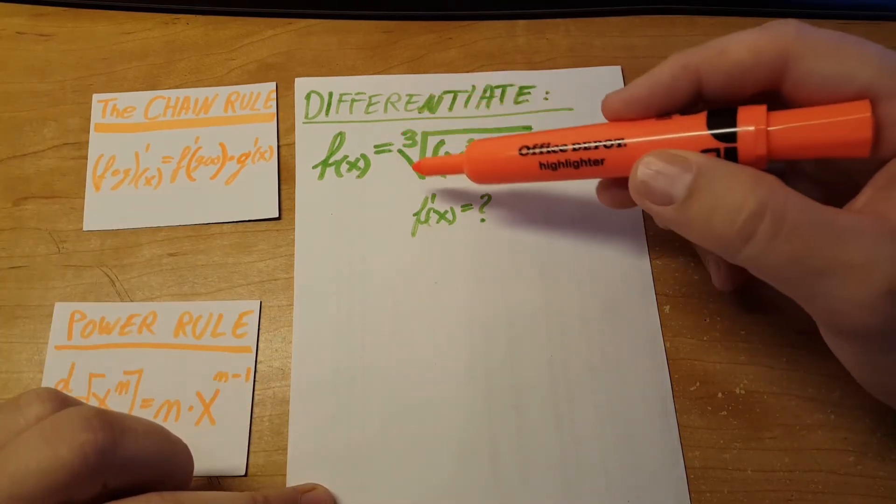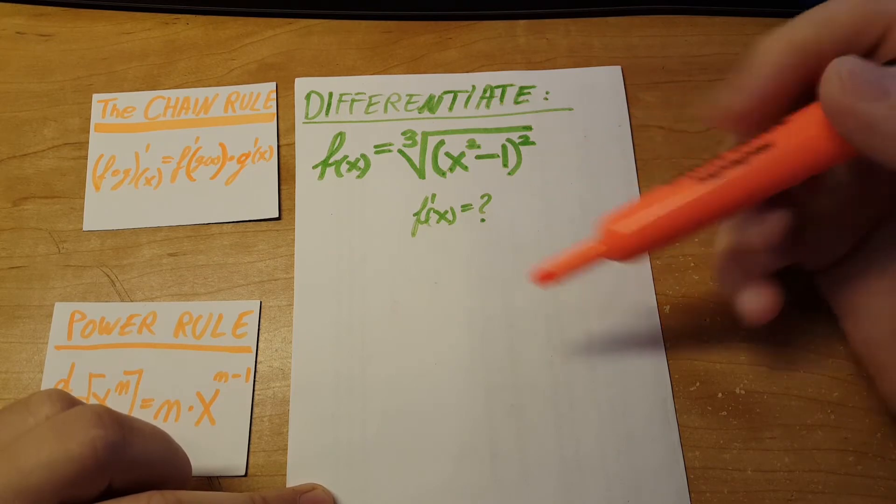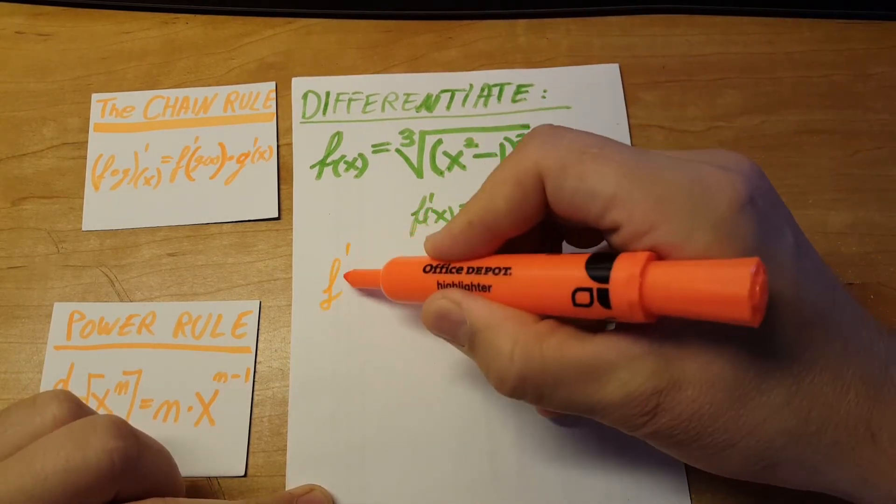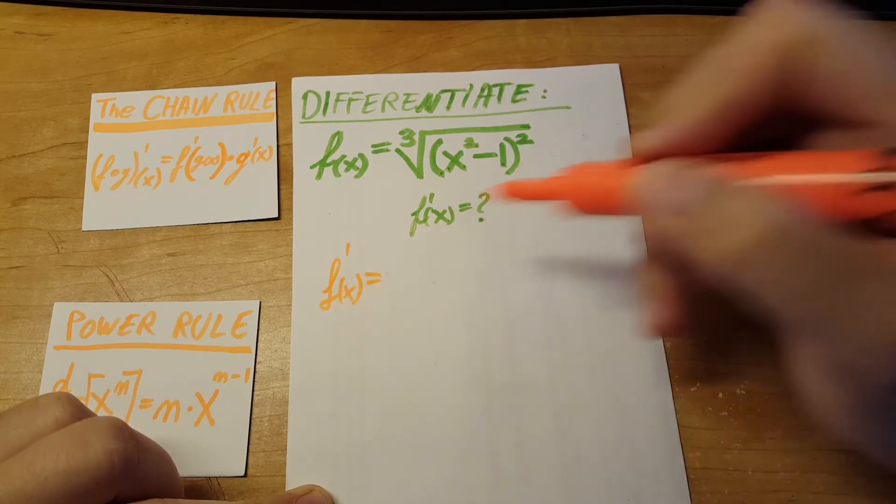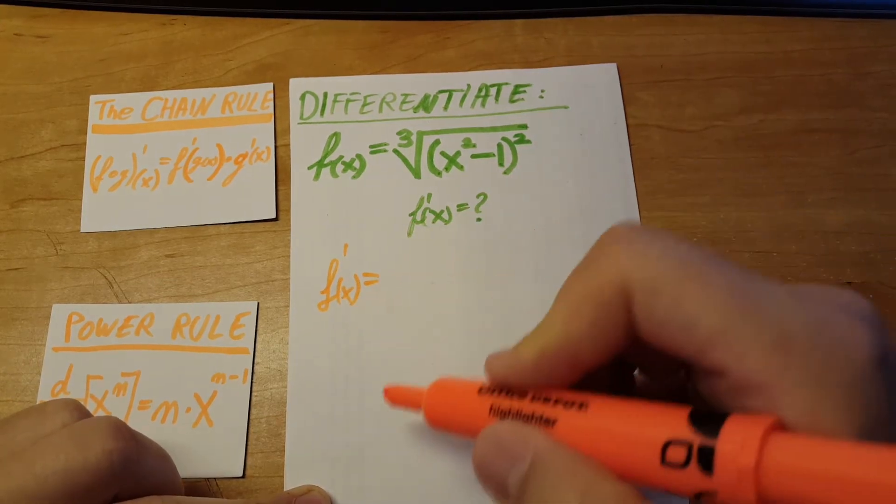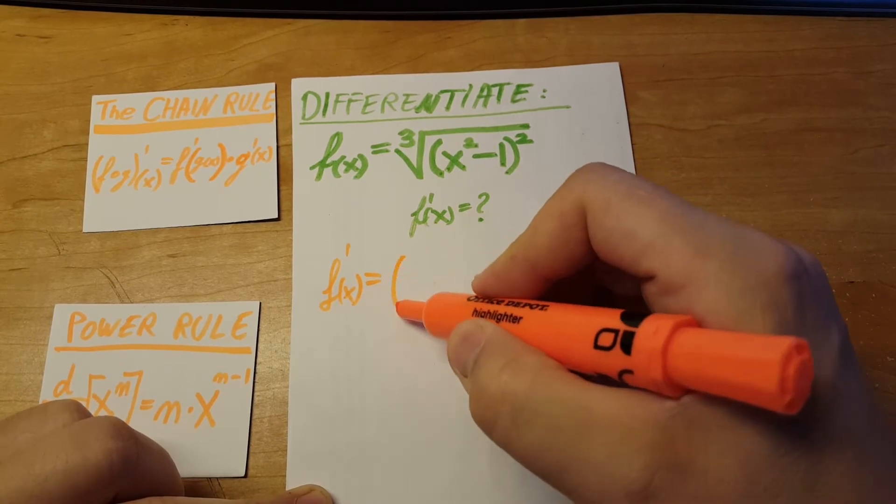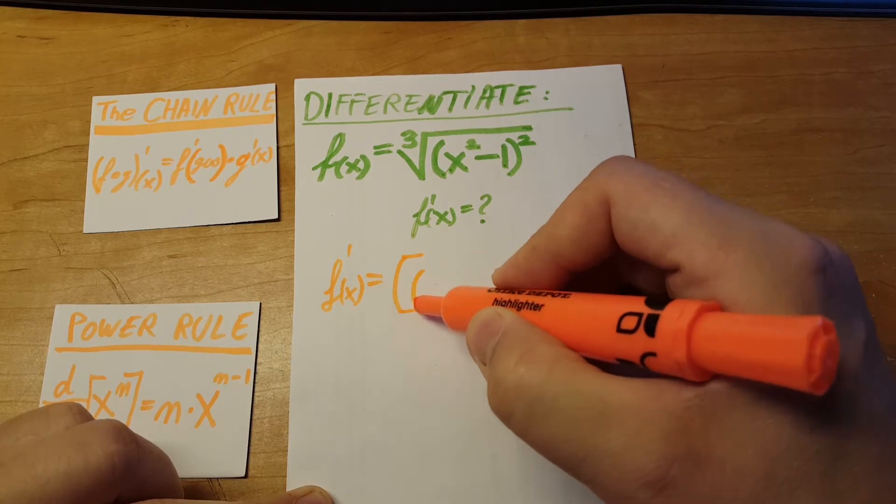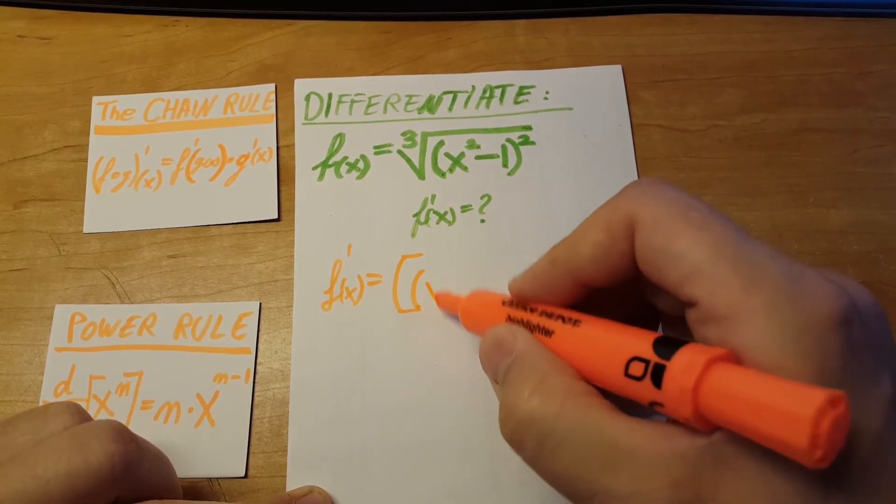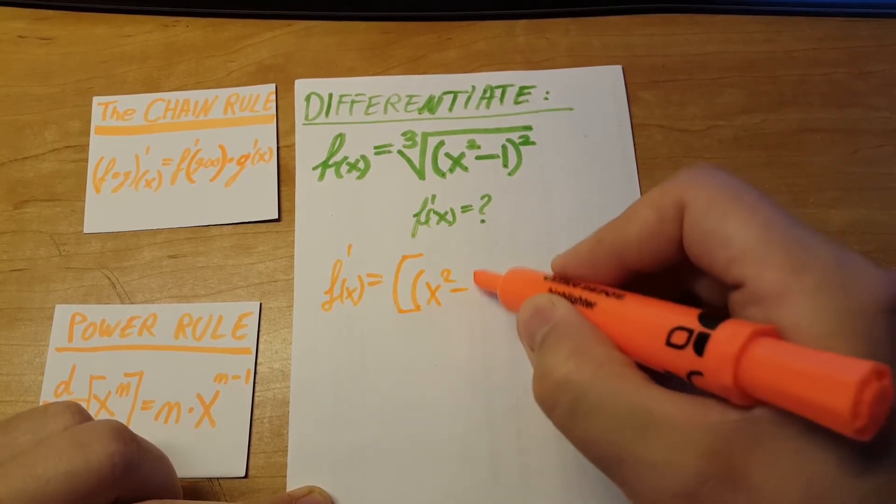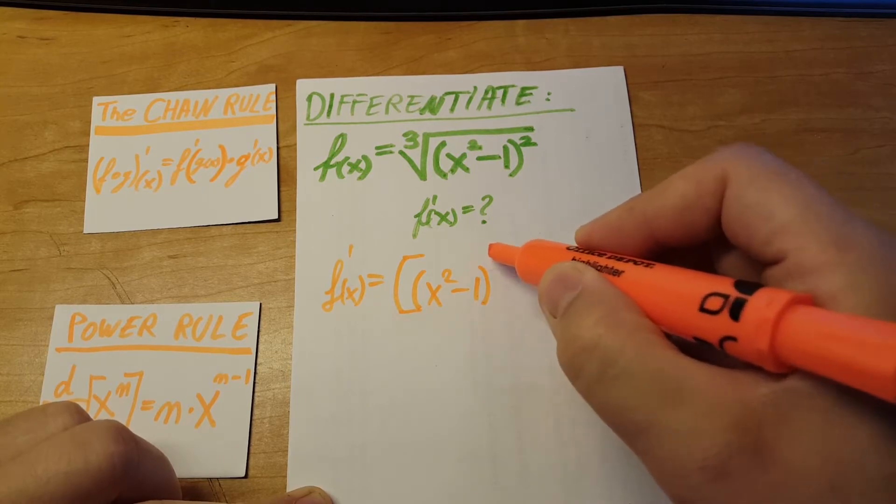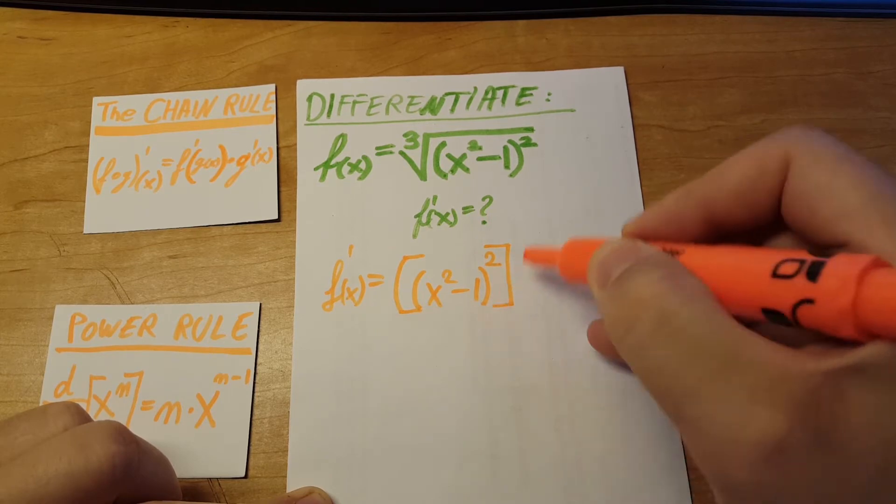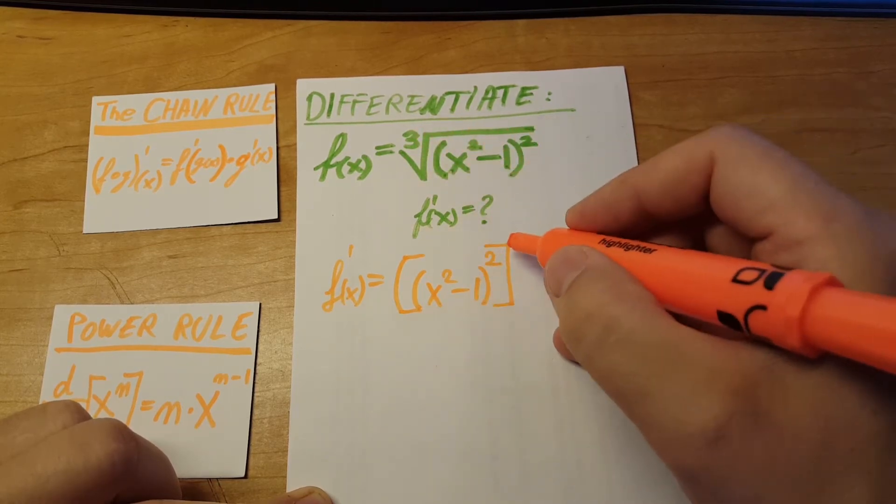First, we're going to take the cube root into an exponent. So f prime x will be, we're going to do a parenthesis, let's do a square parenthesis. On the inside, we're going to leave everything the same and that's on the square. And on the outside, we're going to turn this into one third.